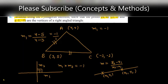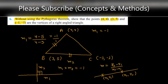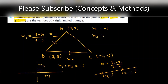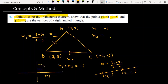Now let's find the slope of BC, represented as M2. M2 = (y2 - y1) / (x2 - x1) = (5 - (-1)) / (3 - (-1)) = (5 + 1) / (3 + 1) = 6 / 4 = 3/2. So M2 = 3/2.